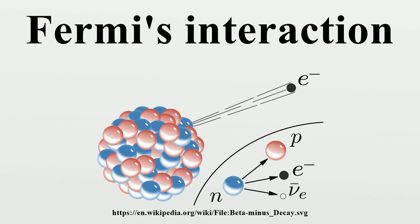In a later publication, Fermi first submitted his tentative theory of beta decay to the famous science journal Nature, which rejected it for being too speculative. Nature later admitted the rejection to be one of the great editorial blunders in its history. Fermi then submitted the paper to Italian and German publications, which accepted and published it in 1933 in those languages, but it did not appear at the time in a primary publication in English.